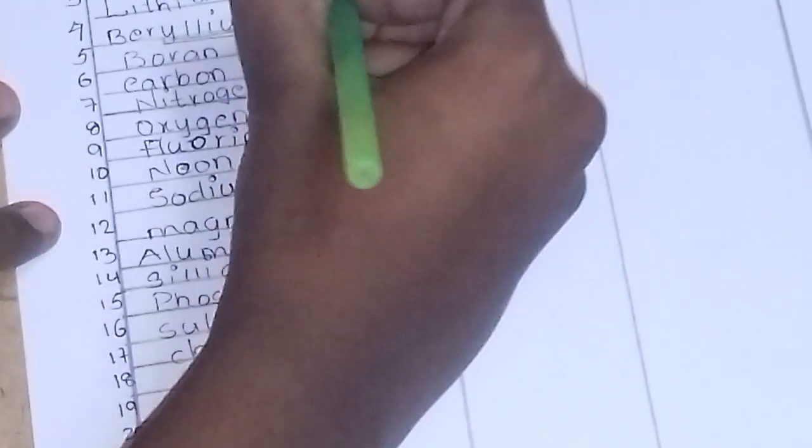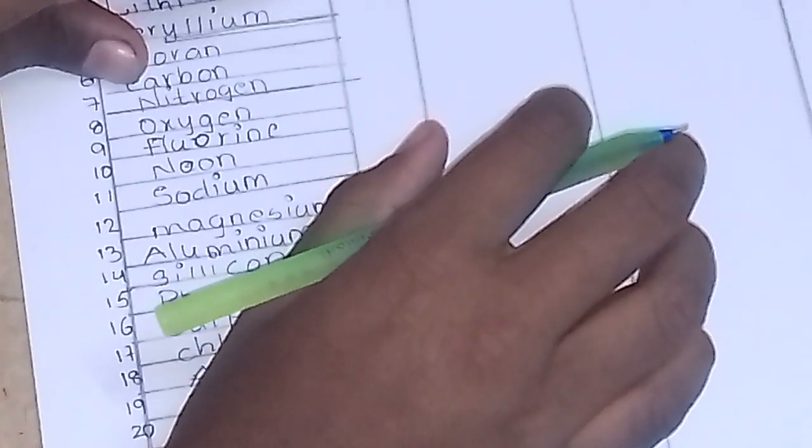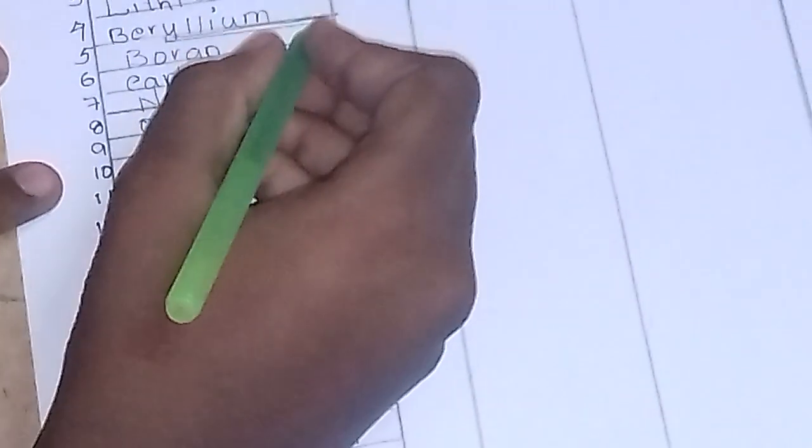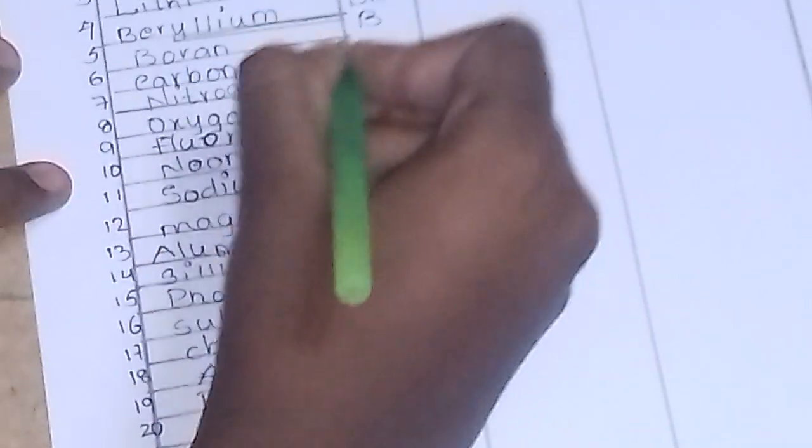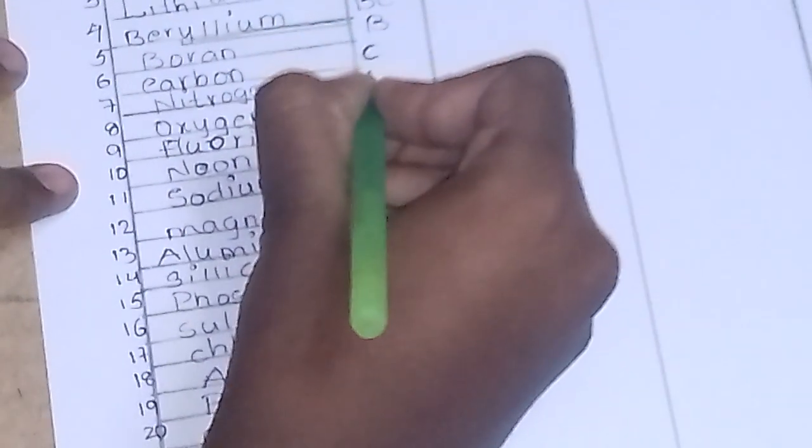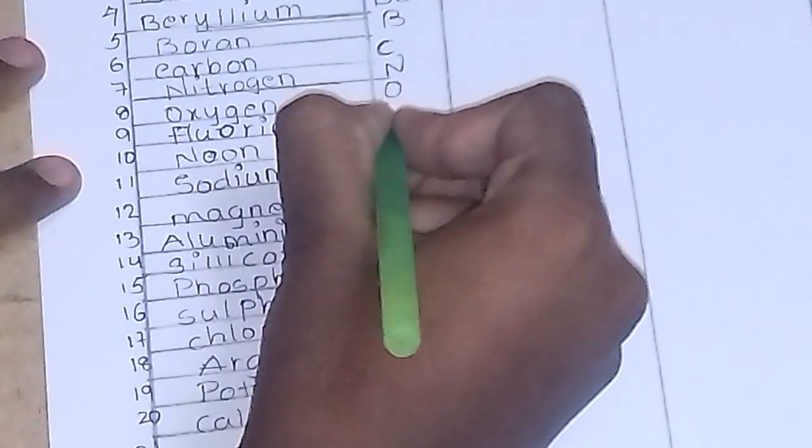We shall learn the symbols for all these elements. Hydrogen, its symbol is H. For helium, HE. For lithium, LI. Remember that the first letter should be capital and the second letter should be small. Next beryllium, BE. The fifth one is boron, B. Carbon, C. Nitrogen, N. Oxygen, O. Fluorine, F.